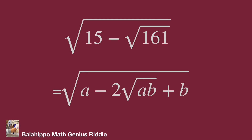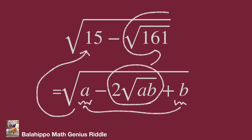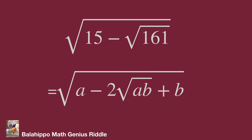After that, we can generate two equations: a plus b equals 15, and 2√(ab) equals √161. Therefore, we can utilize these two equations to find the values for a and b. That's one method. Furthermore, we can go through another way.